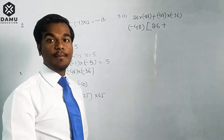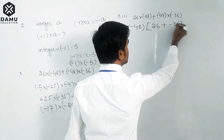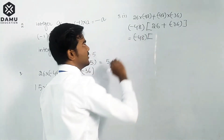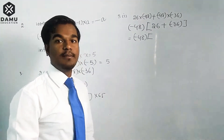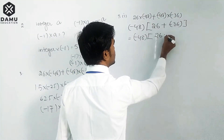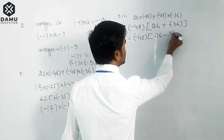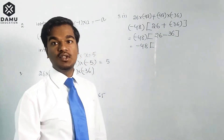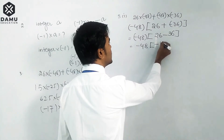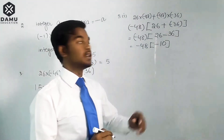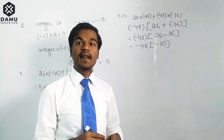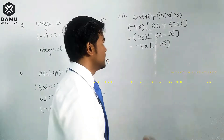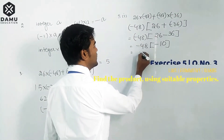After taking minus 48 as common, the remaining terms are 26 and minus 36. So we get minus 48 into (26 + (−36)), which is minus 48 into (26 − 36). Since 36 is bigger, 26 minus 36 equals minus 10. Then minus 48 into minus 10 gives plus 480.